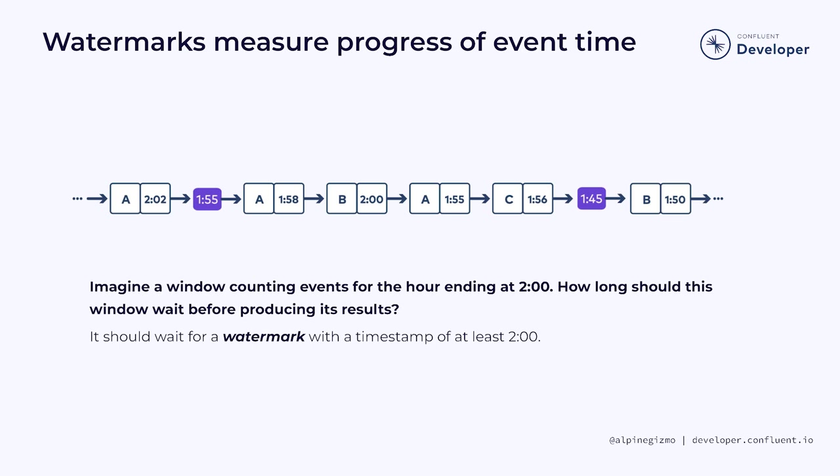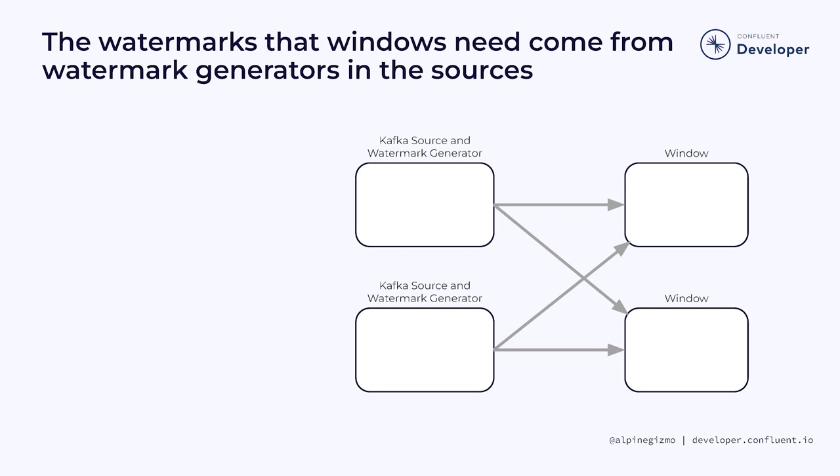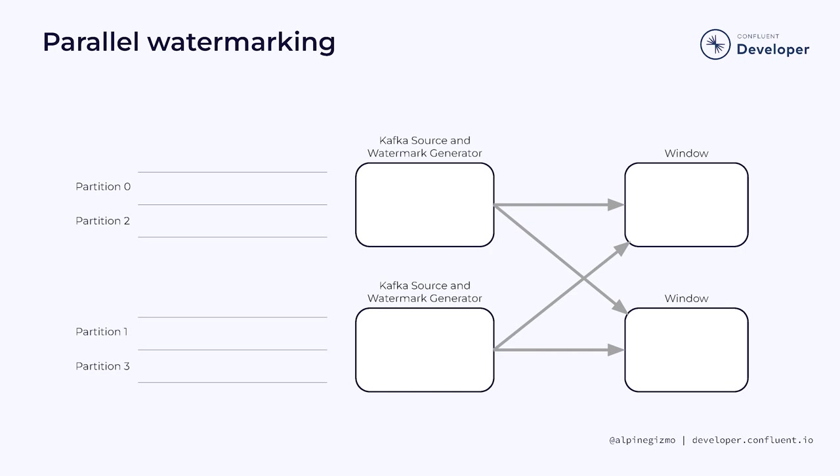These watermarks come from a watermark generator that runs inside of Flink's Kafka consumer. I'm about to walk you through an example of how this works. This will get a bit complicated, but these details are important because if the watermarks aren't working correctly, the application may fail to produce any results. What you are seeing here is a Kafka source followed by a window. Both the source and the window have a parallelism of 2, and the window is counting events by color, which is why the sources are connected to the windows by a network shuffle that implements this repartitioning.